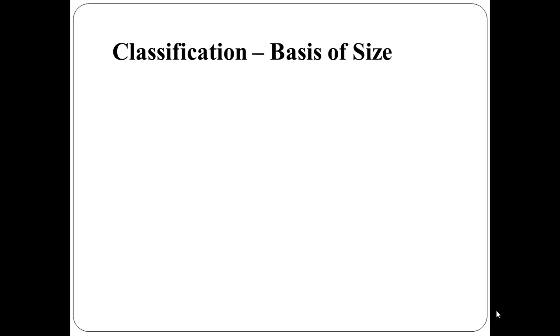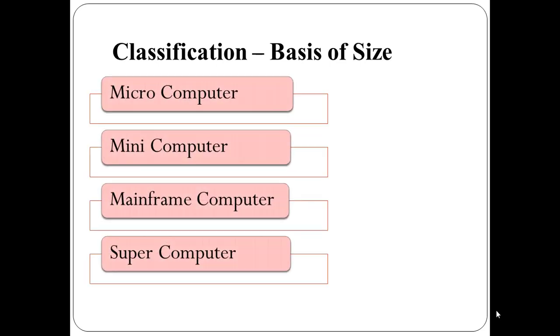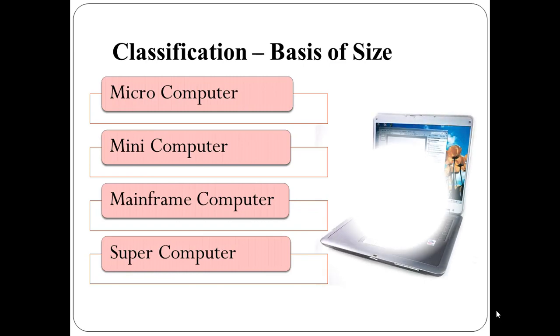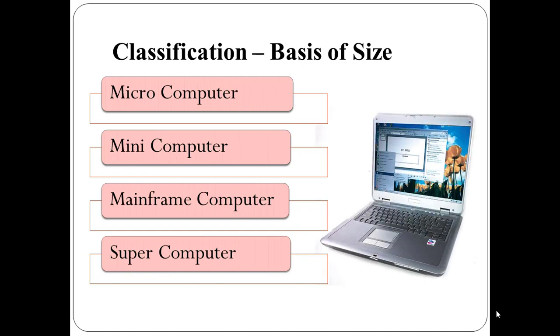Depending on the basis of size and type, there are four different types of computer: microcomputer, minicomputer, mainframe computer, and supercomputer.